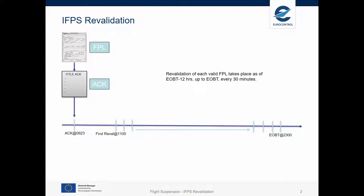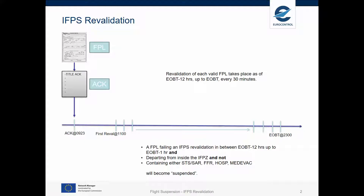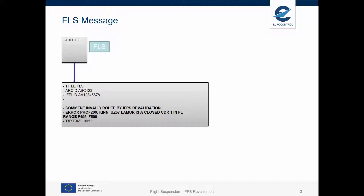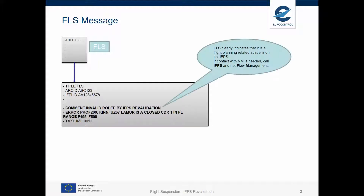If the flight fails a revalidation not later than EOBT minus 1 and matches the criteria that appear now on the screen, then the flight gets suspended. The corresponding FLS that will be sent clearly indicates the reason for suspension. Therefore, for this type of flight suspension, you should contact the IFPS if needed and not flow management.